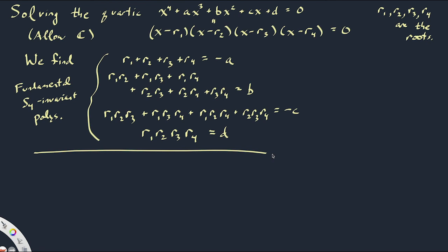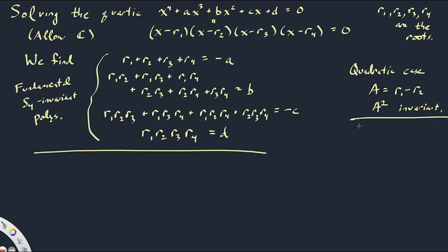Remember in the quadratic case, one idea to solve the equation was to look at the difference of the two roots — call it α — where α² was invariant and expressible in terms of the fundamental invariant polynomials. In the cubic case, instead of a single α, we had r1 + ωr2 + ω²r3 and a similar expression using ω² and ω, where α³ + β³ was invariant.